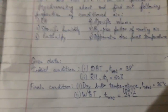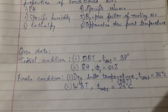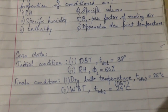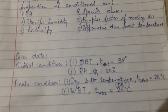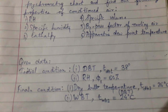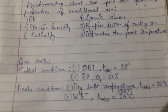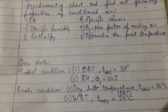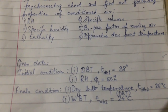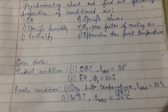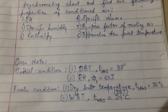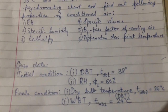Let's write down the given data. Initial condition: dry bulb temperature T_DB1 = 38°C and relative humidity φ1 = 60%. Final condition: dry bulb temperature T_DB2 = 26°C and wet bulb temperature T_WB2 = 24°C. As you can see, the dry bulb temperature has been reduced from 38°C to 26°C from initial to final condition.